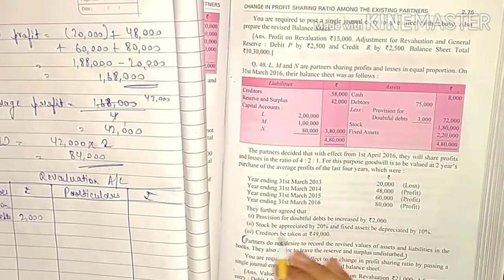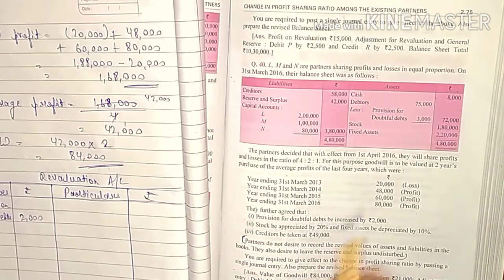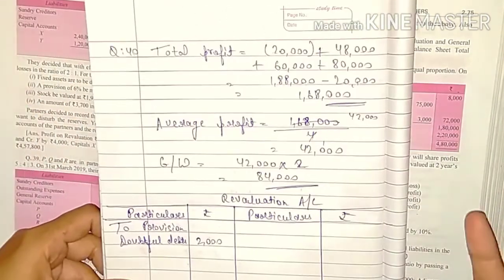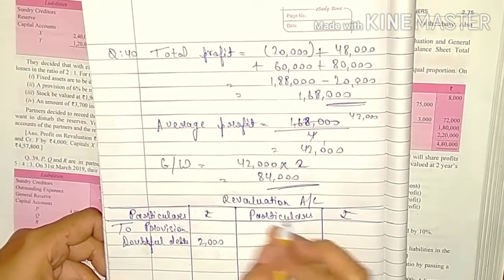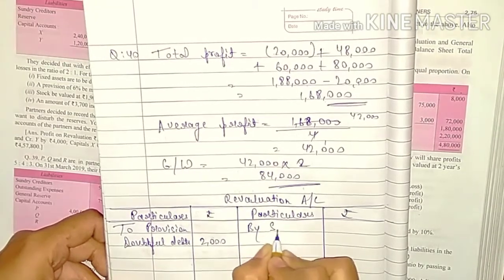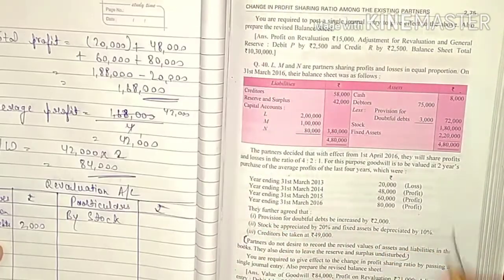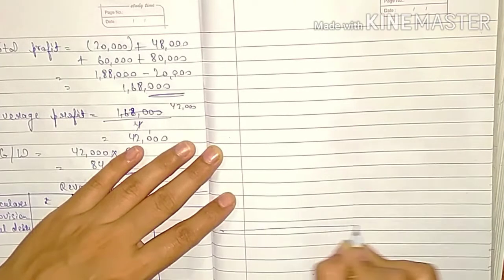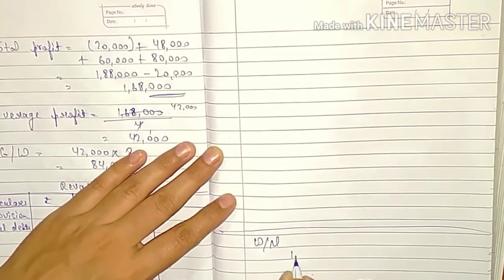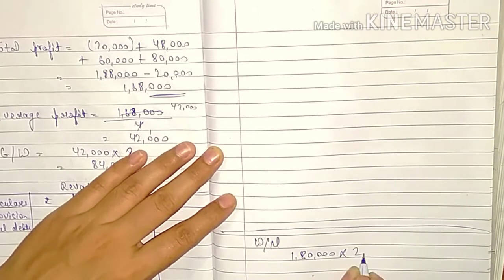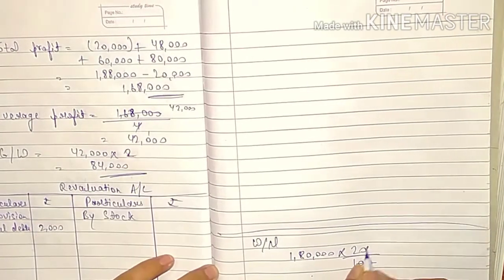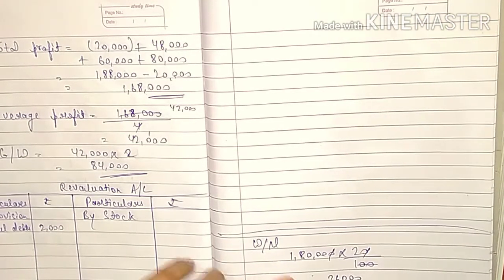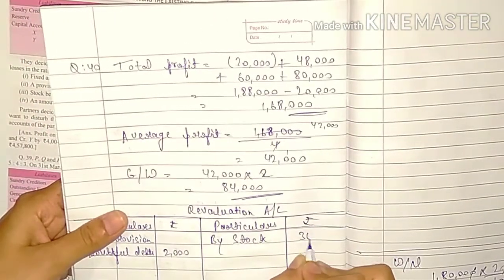Second point: stock be appreciated by 20%. The stock value increased by 20%, meaning an asset increase — profit for the company. So its entry goes on the credit side. Stock value is 1,80,000 × 20/100 = 36,000. Entry on the credit side: 36,000.